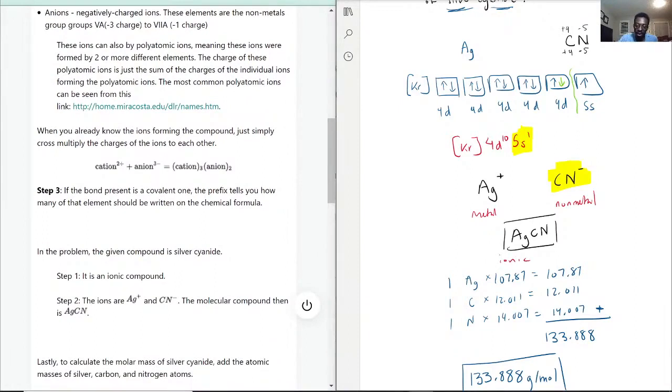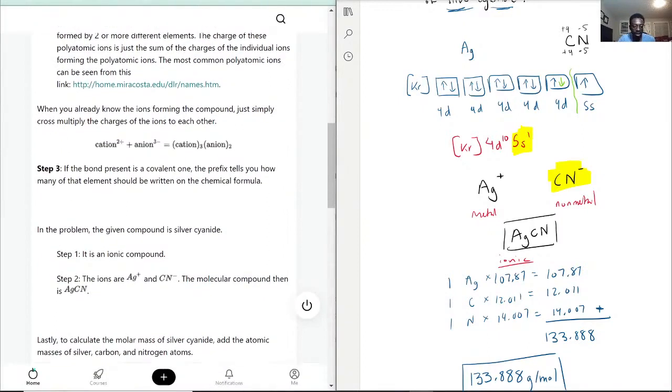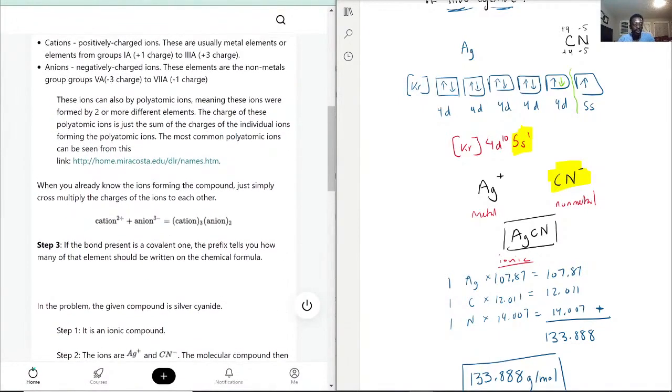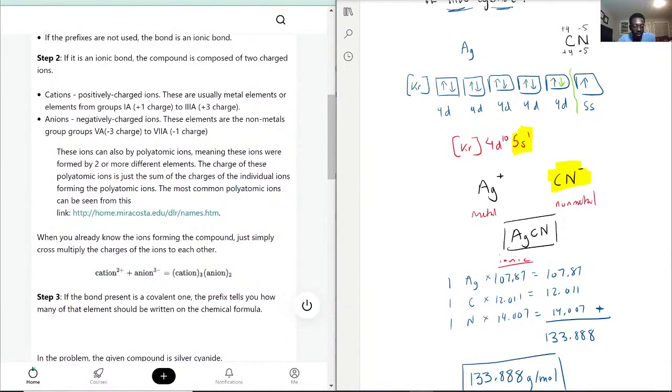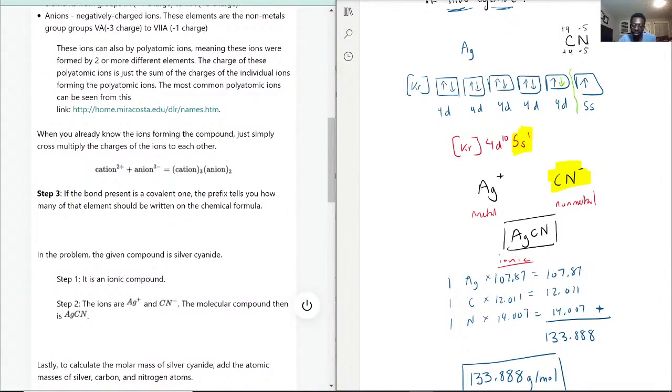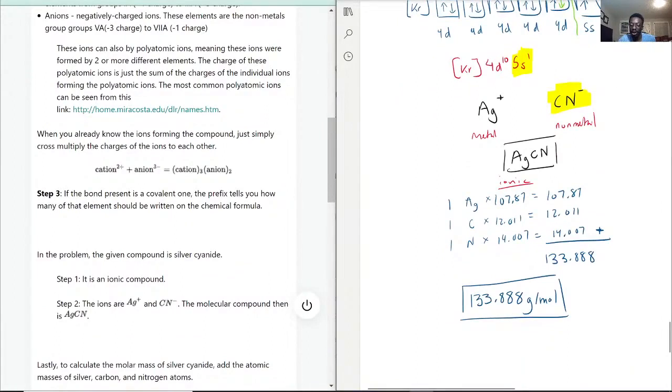So they got that part right. The ions are silver and cyanide. With that being said, they kind of just stated it. I'm glad I was able to at least show how silver likes to lose one electron and carbon nitrogen overall has a net charge of minus one.